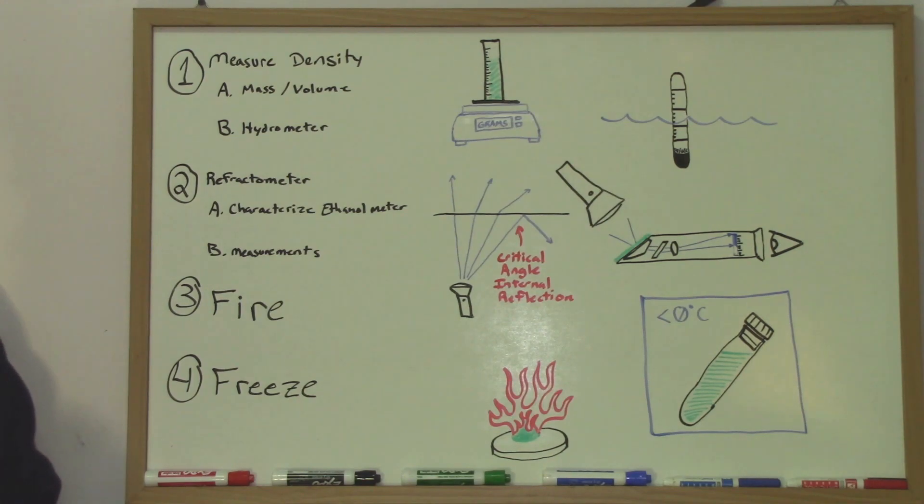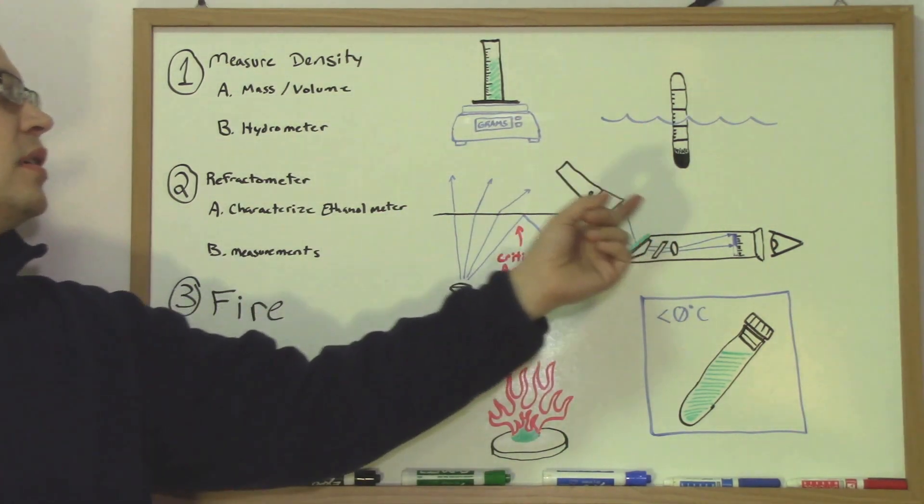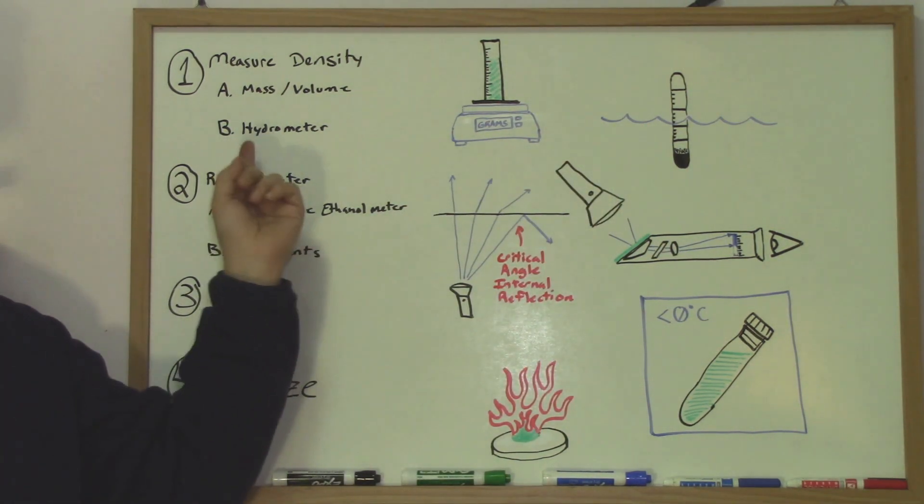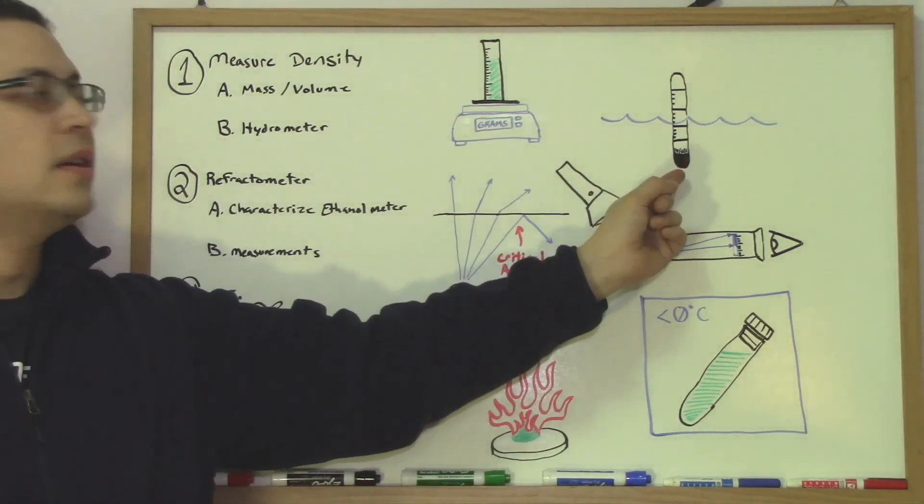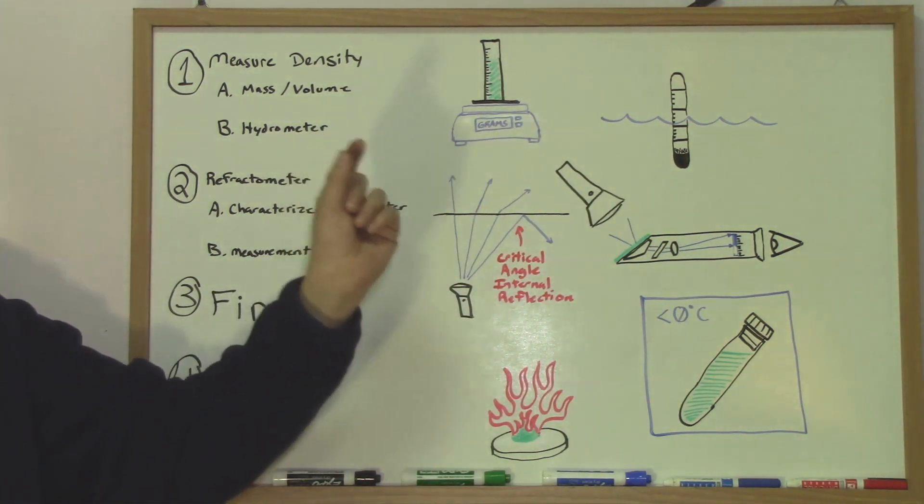Another way is we can use a hydrometer. That's basically the principle of buoyancy and how far a calibrated hydrometer sinks.